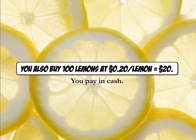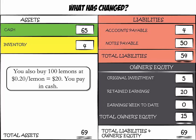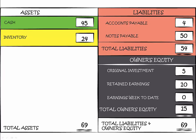You also buy $20 worth of lemons for which you pay in cash. Cash went down by $20 to $45. Inventory went up by $20 to $24. The changes are internal to the assets column. Total assets and total liabilities plus owner's equity remain at $69.